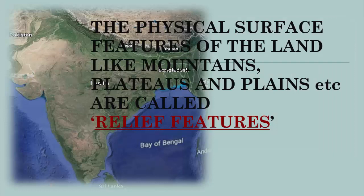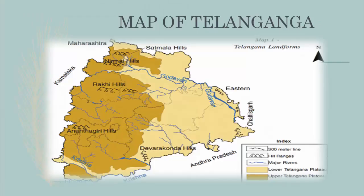The physical surface features of the land, like mountains, plateaus, and plains, are called relief features. Telangana state has varied relief features. Our state has an upper Telangana plateau in the west; the Godavari and Krishna rivers flow eastwards through this plateau. The remaining area is known as the lower Telangana plateau, which also slopes eastward. The twin cities Hyderabad and Secunderabad, Sangareddy, Mahbubnagar, and Nalgonda are on the upper Telangana plateau, while Warangal and Karimnagar are on the lower Telangana plateau.